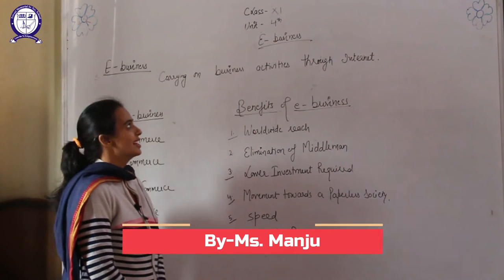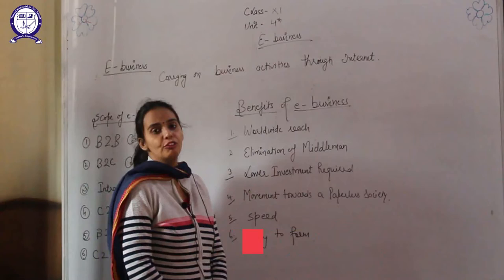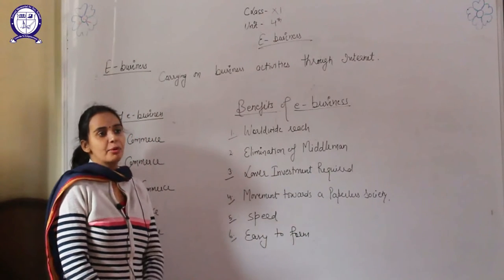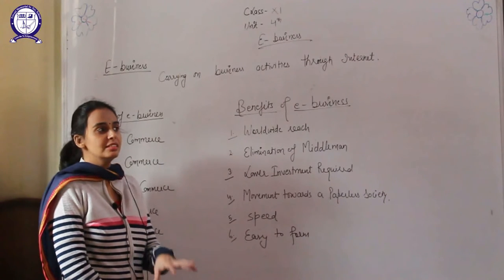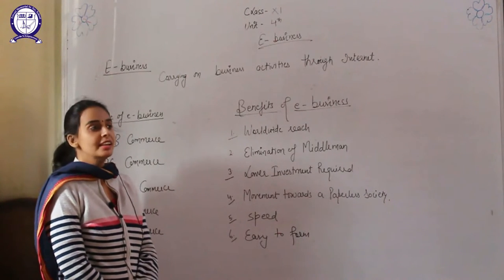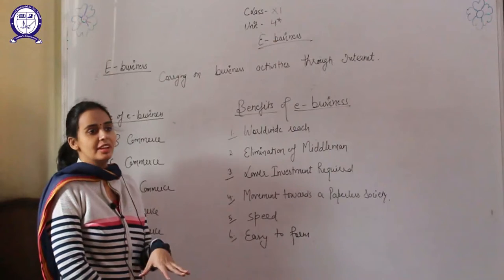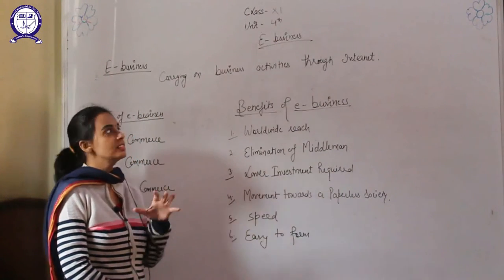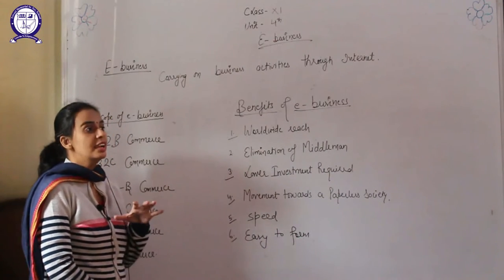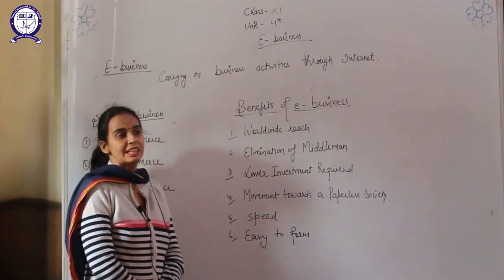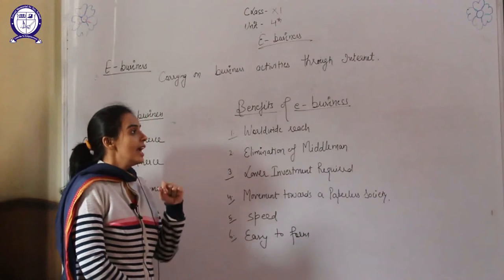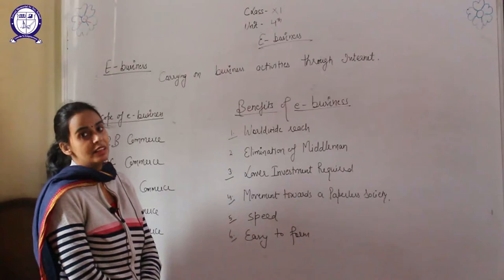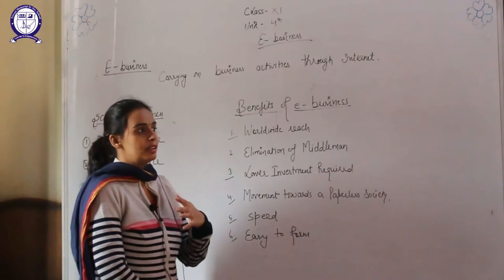Hello students, today we will study about the unit of e-business. Nowadays we generally buy products from Flipkart and Amazon. This is an example of e-business. It means carrying out business activities — buying and selling of goods and services through the internet. This is the concept of e-business, and nowadays e-commerce or e-business activities have been increasing over the years.